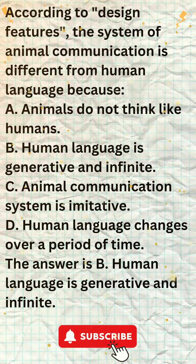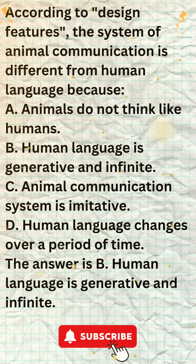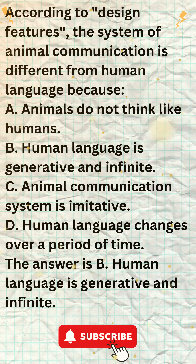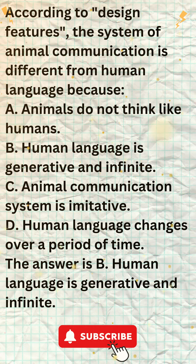The other options are incorrect. Animals do think, but they think differently from humans. Animal communication systems are not imitative in the sense that animals are not simply copying the signals of other animals. Human language does change over time, but this is not a fundamental difference between human language and animal communication systems.